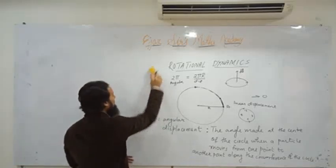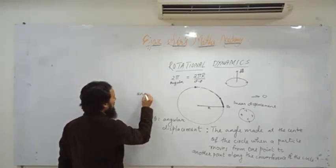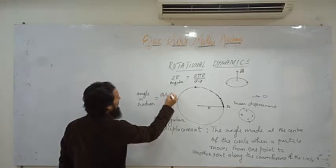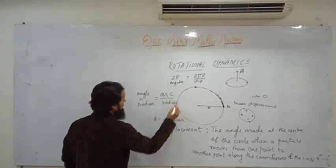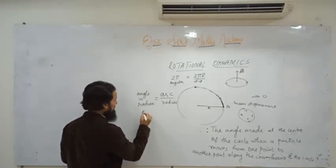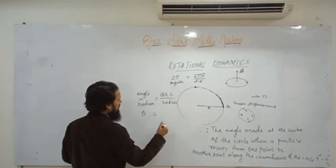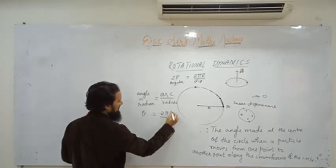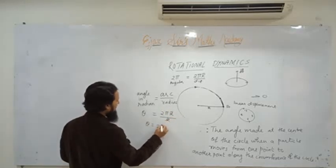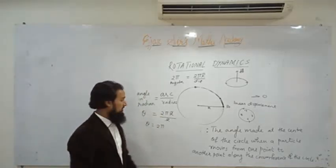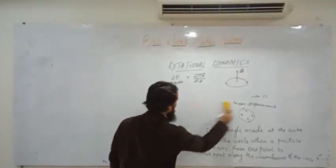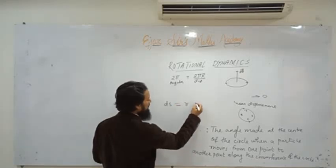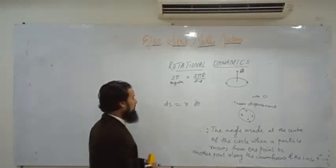We studied in 11th standard that angle (in radians) = arc length / radius, i.e., θ = s/r. So the relationship between linear displacement and angular displacement is: ds = r · dθ. Linear displacement equals radius multiplied by angular displacement.